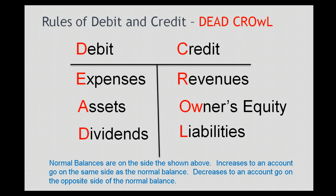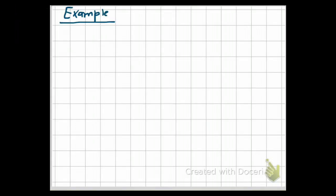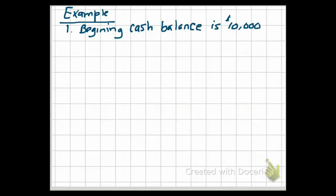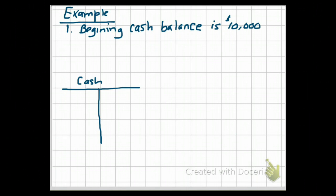Now we'll look at an example. Make sure you have your mnemonic and your T-account written out in front of you so you can follow along. The beginning cash balance for this company is $10,000. We show accounts visually using our T-account, so our cash would be shown as a T-account with the title of that T-account being cash. Using your rules of debit and credit shown on your mnemonic, you should be able to tell me on which side — the debit side or the credit side — would show a beginning cash balance of $10,000.